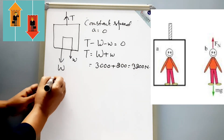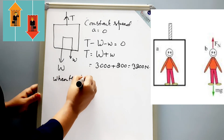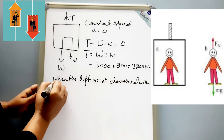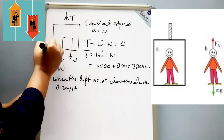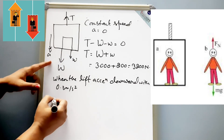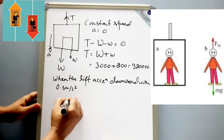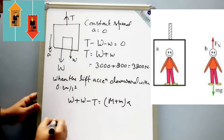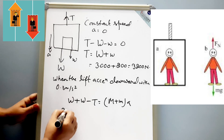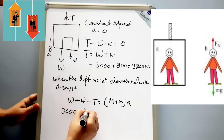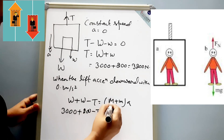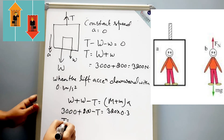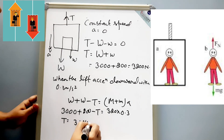Third situation: the lift accelerates downward at 0.3 m/s². When the lift is accelerating downward, the force equation becomes: W plus w minus T equals (M plus m)A. Substituting values: 3000 plus 200 minus T equals 320 × 0.3. Solving for tension, T equals 3104 N.